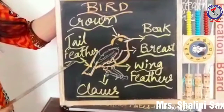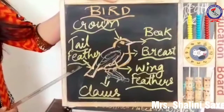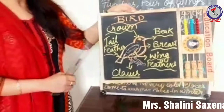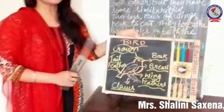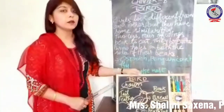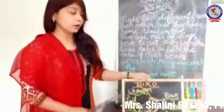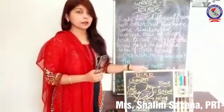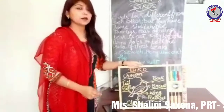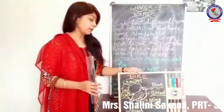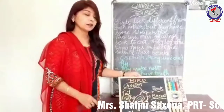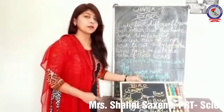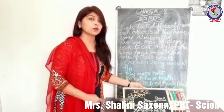Wing feathers and tail feathers help birds to fly. They also have some small feathers which keep them warm. The tail feathers and wing feathers help them to fly.